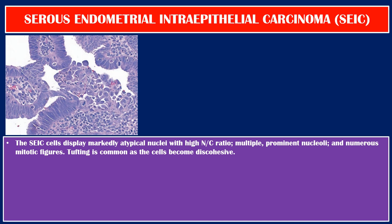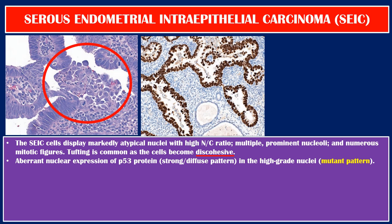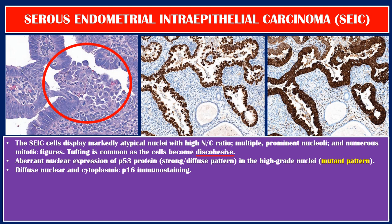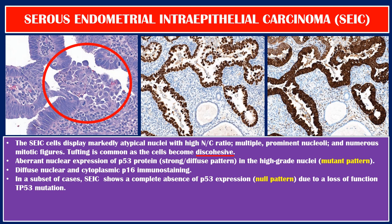The SEIC cells display markedly atypical nuclei with high nuclear-to-cytoplasmic ratio, multiple prominent nucleoli, and numerous mitotic figures. Tufting is common as the cells become discohesive. Immunohistochemistry shows aberrant nuclear expression of P53 protein in a strong and diffuse pattern (the mutant pattern), as well as diffuse nuclear and cytoplasmic P16 immunostaining. In a subset of cases, SEIC shows a complete absence of P53 expression — called the null pattern — due to a loss-of-function TP53 mutation.